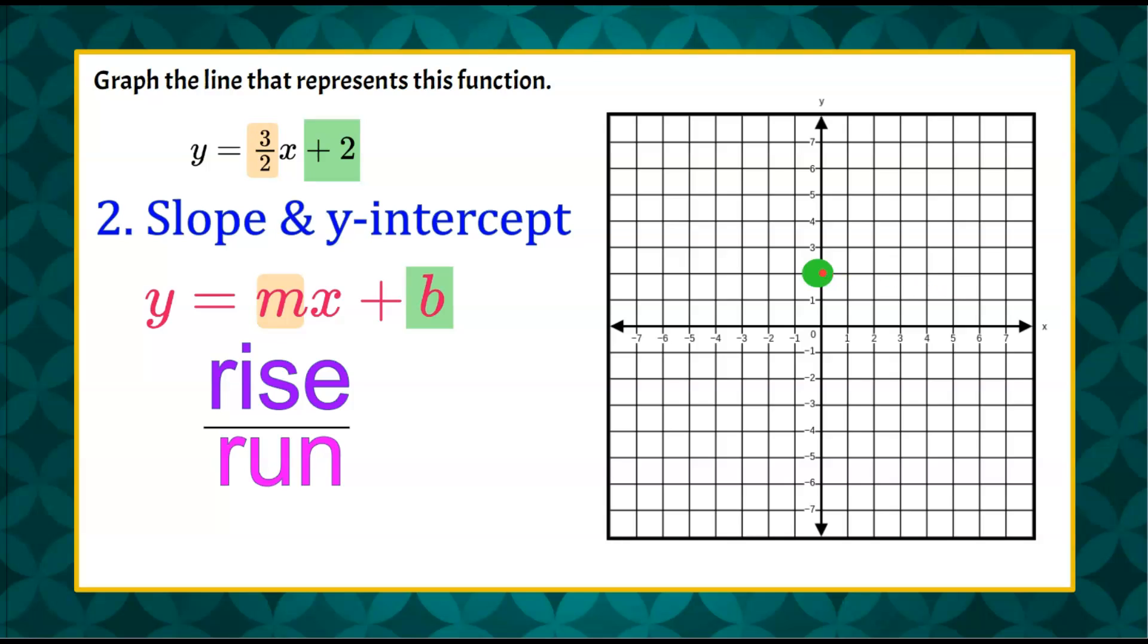So from this point, I'm going to rise 3 and run 2, and plot a point. And we can do it again. Let's rise 3, and run 2, and plot a point. Now I have 3 points, and I can see, draw my line.